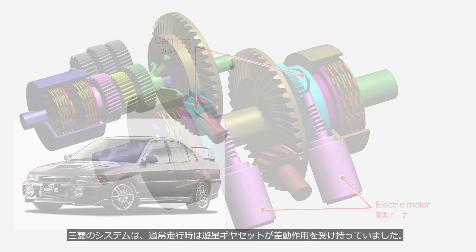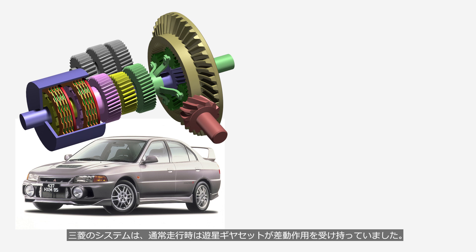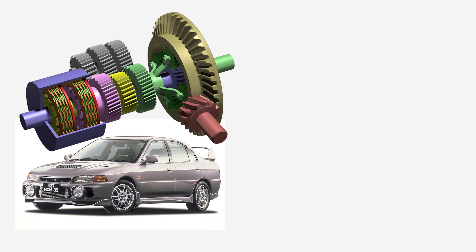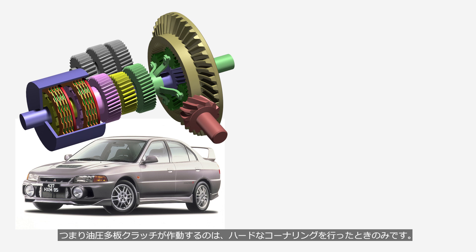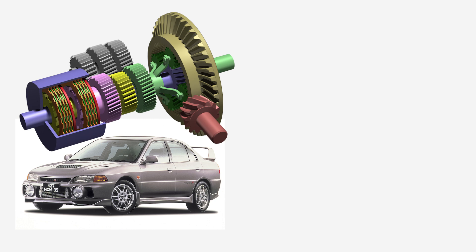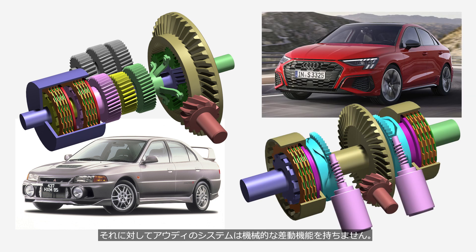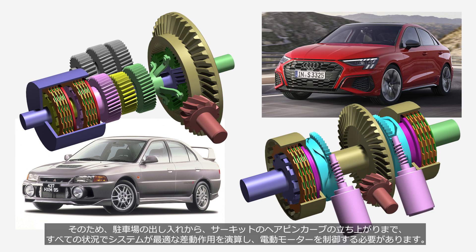In Mitsubishi's system, the planetary gear set handles differential action during normal driving — in other words, the hydraulic multi-plate clutch operates only during hard cornering. In contrast, Audi's system does not have a mechanical differential function. Therefore, the system must calculate optimal differential action and control the electric motor in all situations, from parking lot maneuvers to acceleration at tight corners on a racetrack.